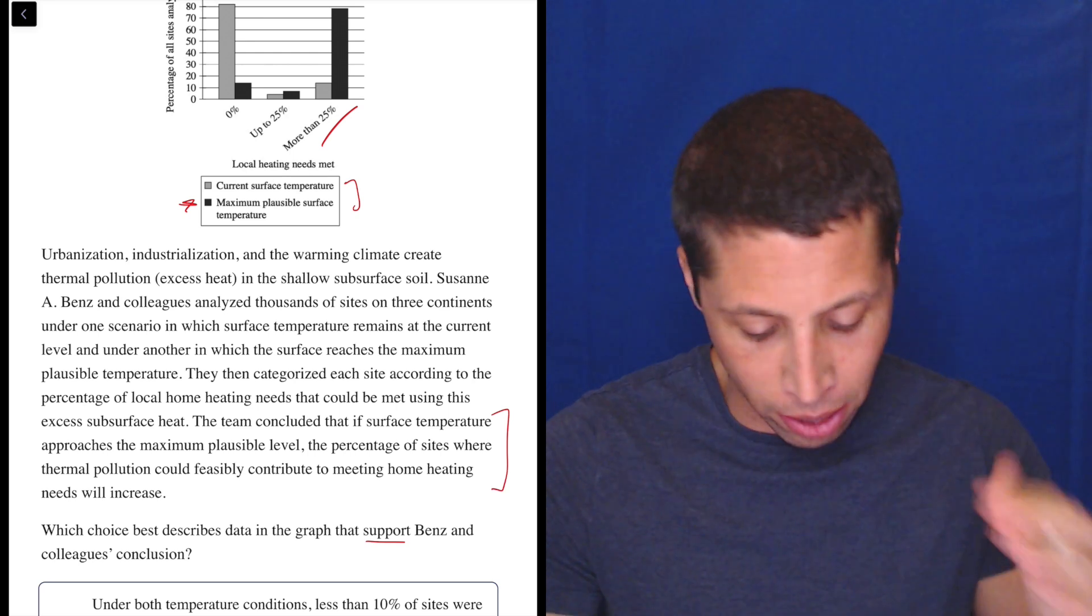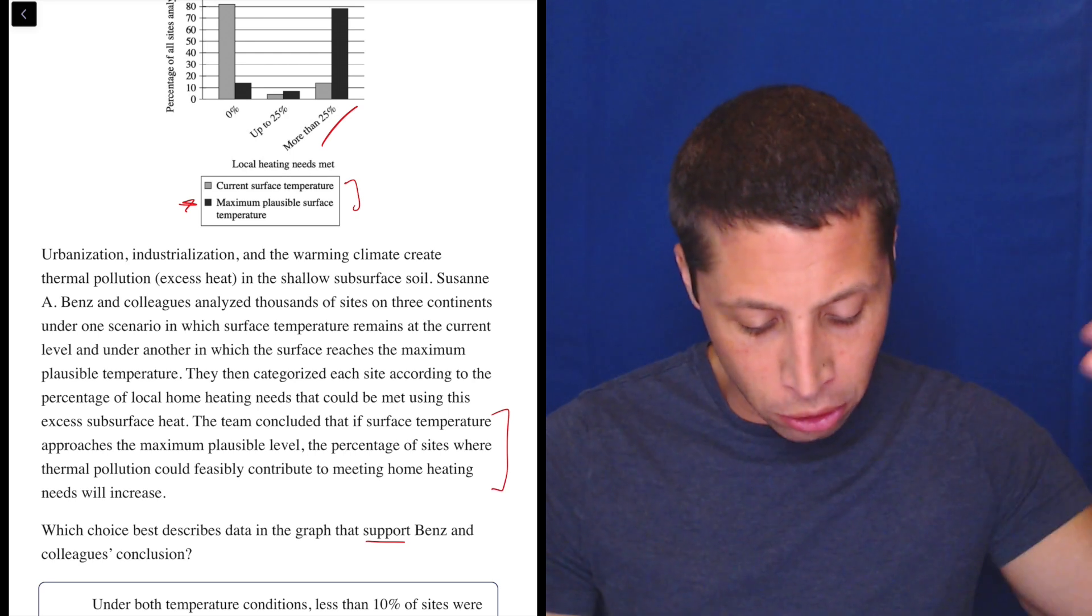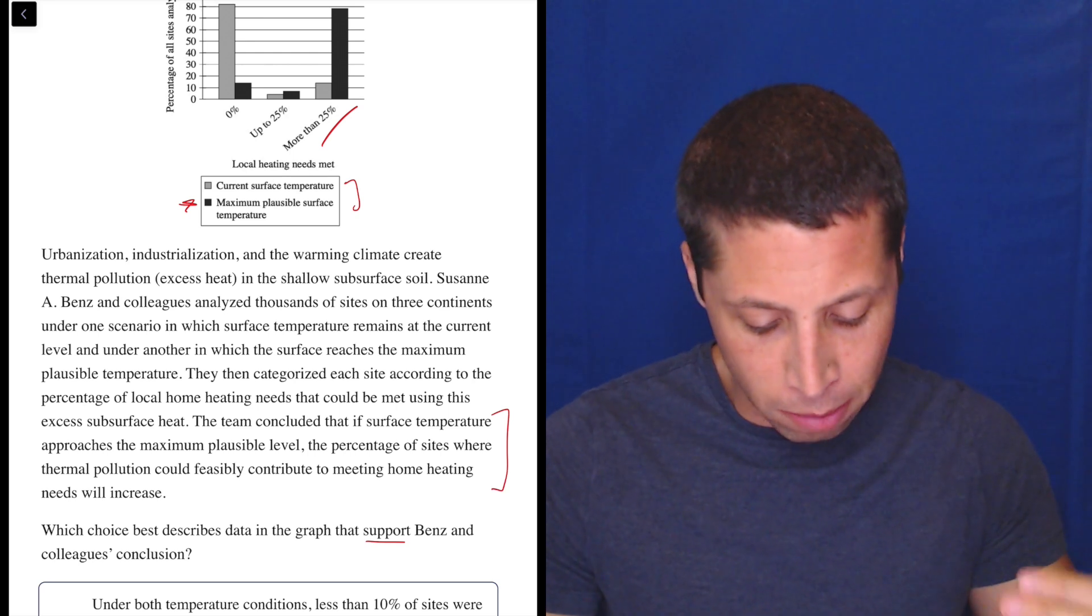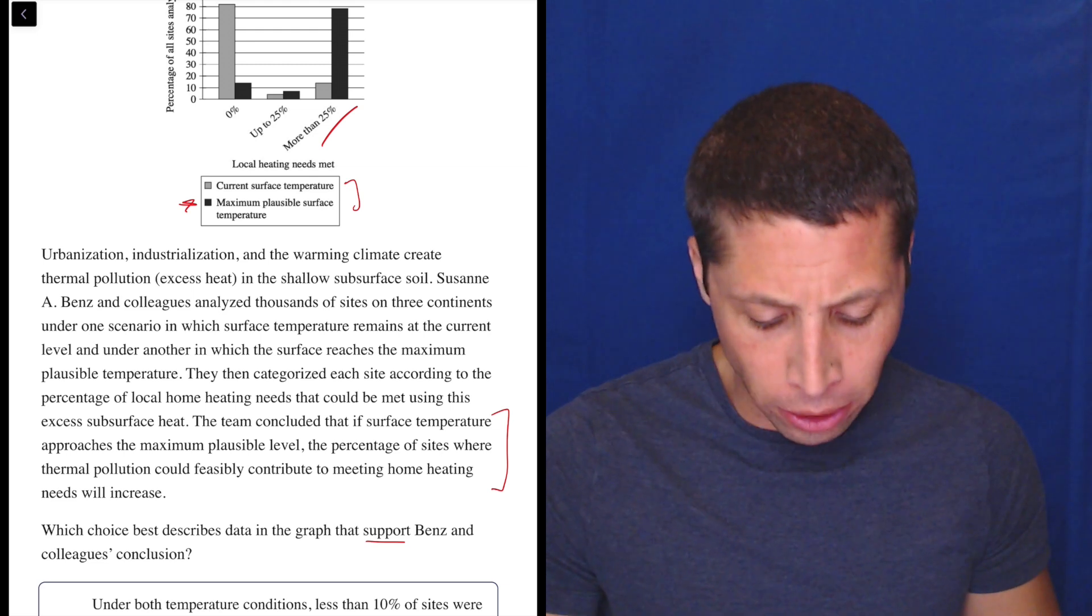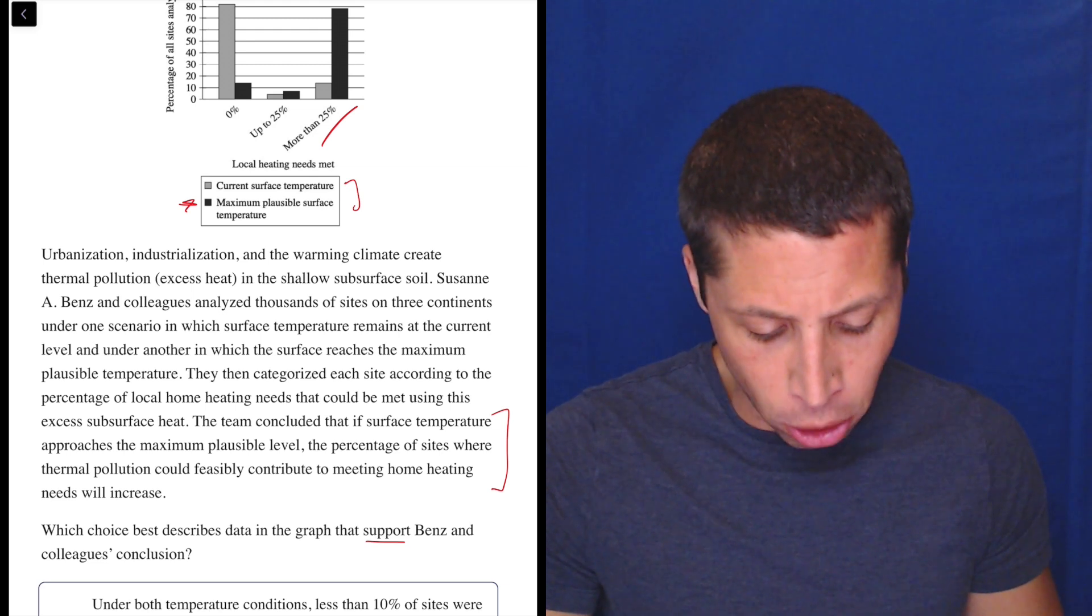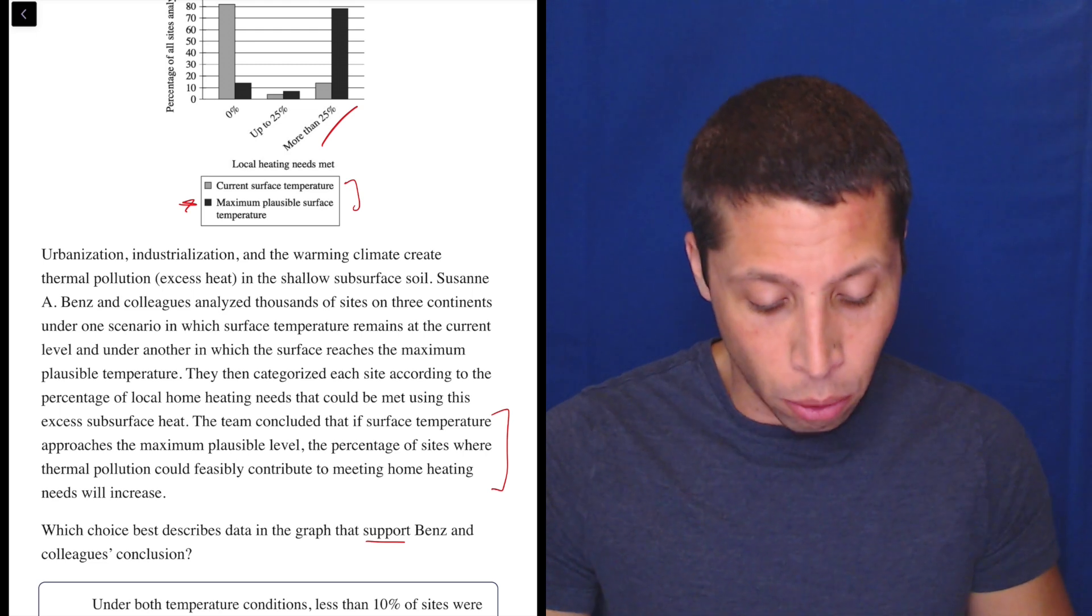The team concluded that if surface temperature approaches the maximum plausible level, so the black, the percentage of sites where thermal pollution could feasibly contribute to meeting home heating needs will increase. So there's our main thing, right?